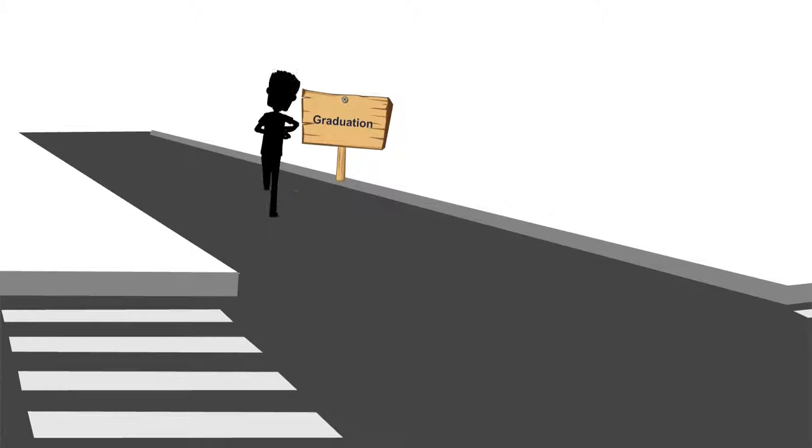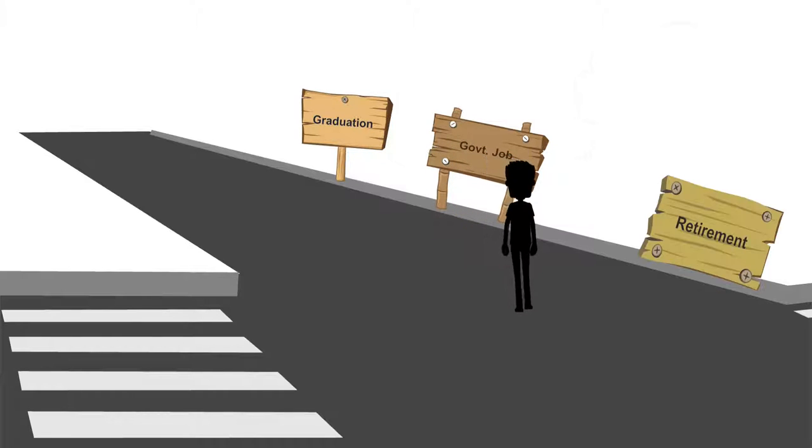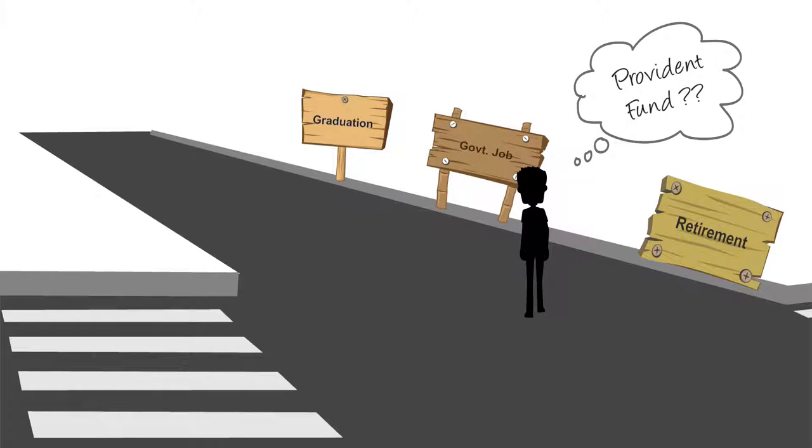At that time, the path to a good life was becoming a graduate and then getting a government job, or if you didn't get a government job, then joining a reputed private company. Once hired, people would work with the same employer all their life and retire with savings in their provident fund and possibly